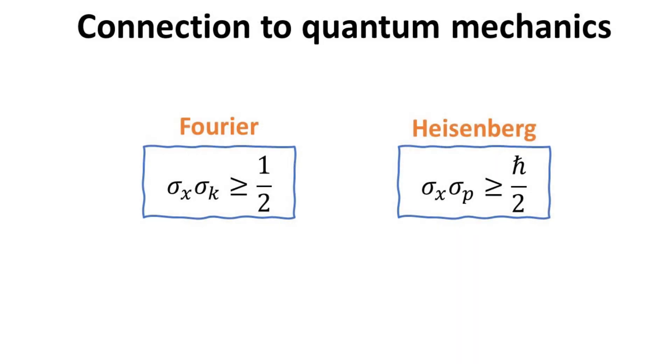The Fourier uncertainty principle is almost the same form as the Heisenberg uncertainty principle, apart from the physical constant h-bar. This is no coincidence, and their similarity can be traced to the fact that the uncertainty principle is a statement about conjugate observables, whose eigenfunctions are related by Fourier transformation in the dual space.